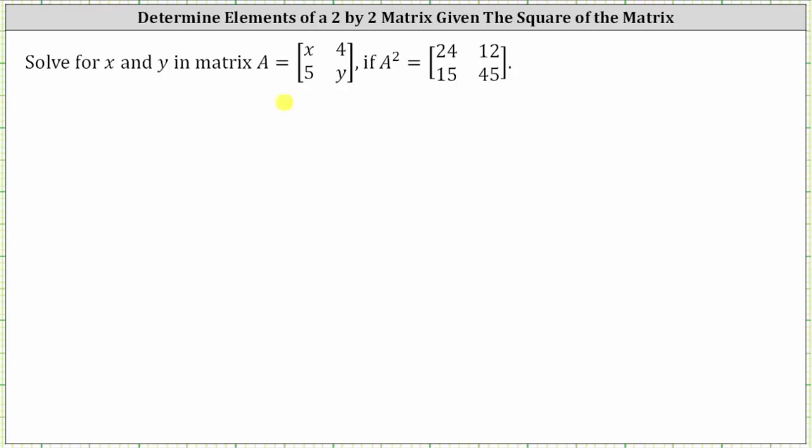Solve for x and y in matrix A if A squared is equal to the given two by two matrix with elements 24, 12, 15, and 45.